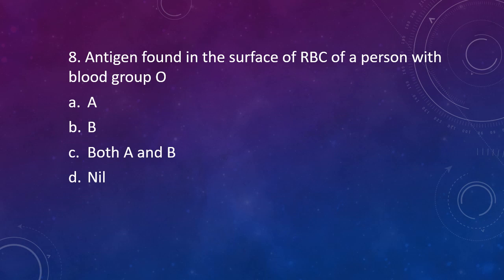Question 8. Antigen found on the surface of RBC in a person with blood group O is A, B, both A and B, or nil? The correct answer is Option D, that is the antigen found on the surface of RBC is nil. Neither A nor B is found. Hence, they act as universal donors. However, they contain both the antibodies in their plasma. Since both the antibodies, that is anti-A as well as anti-B is present, they cannot receive blood from any other blood group other than O itself.